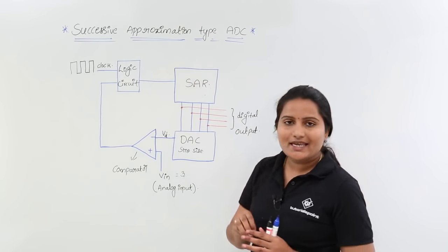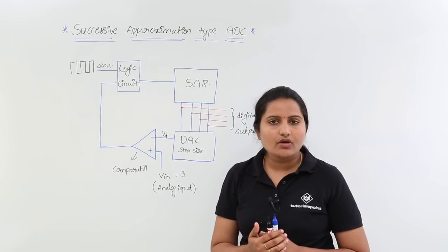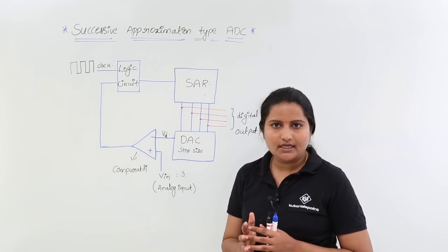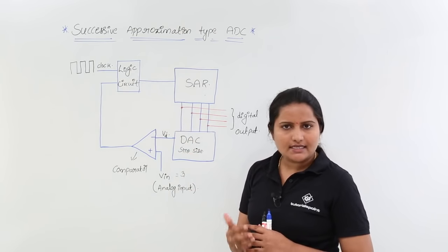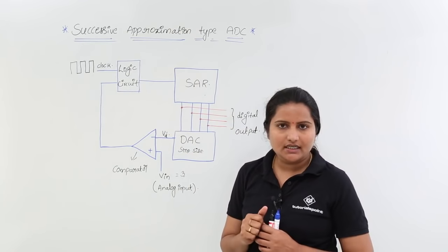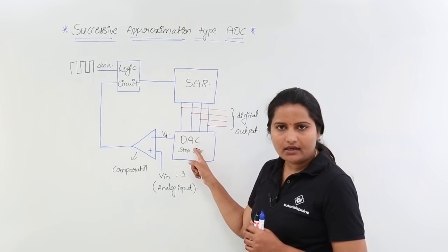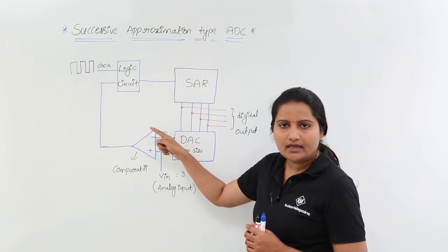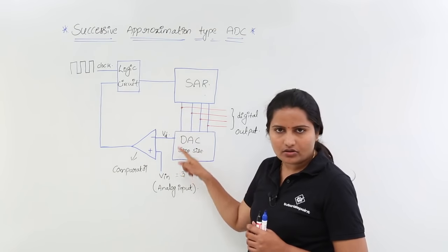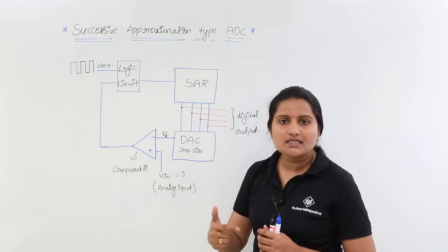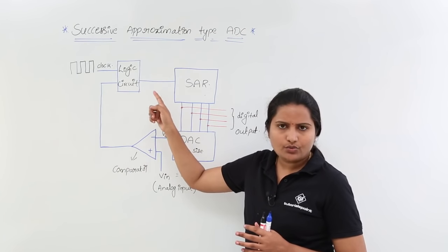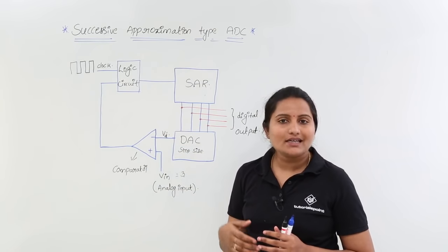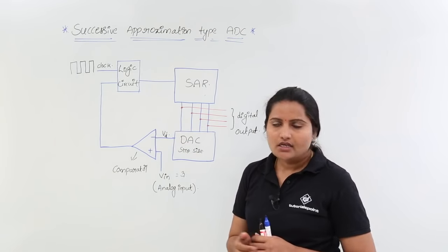Now, to overcome the disadvantages of counter type, we replace the n-bit counter with a SAR — successive approximation register. It has an inbuilt algorithm. The remaining circuit is as it is in counter type: whatever SAR value is generated, that is converted into analog by using a DAC, and that analog is compared with our input voltage. If VIN is greater than the DAC output, that is equivalent to 1. Always for the op-amp, your positive voltage must be higher than negative for the output to be 1; otherwise the output is 0.